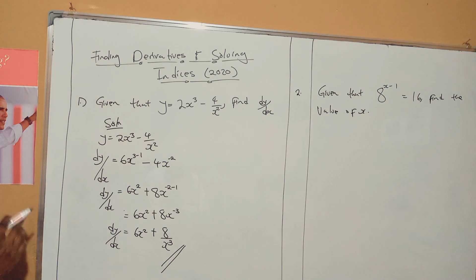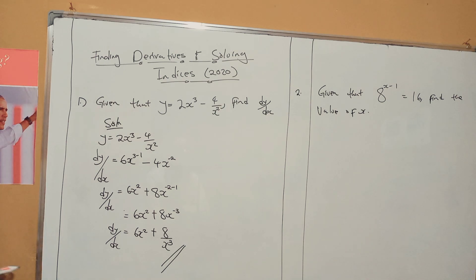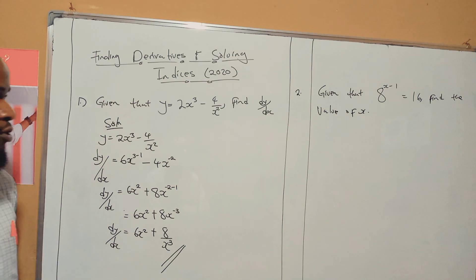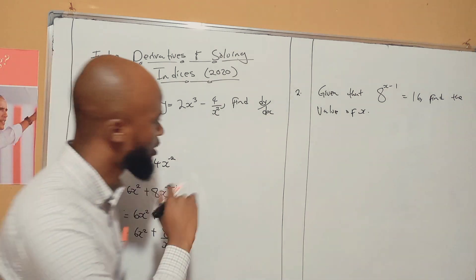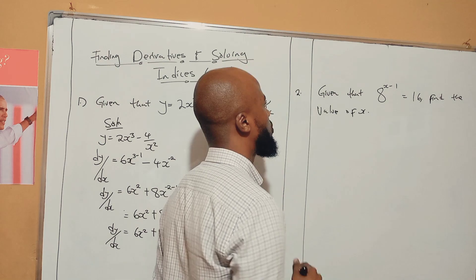Therefore, dy/dx will be 6x squared plus 8. This is a negative — to become positive, it goes as a denominator. You enter x to the power of 3. So you end here. This is what the examiner expected in 2020. Very easy, right? Subscribe to the channel. Let's go to question 2.